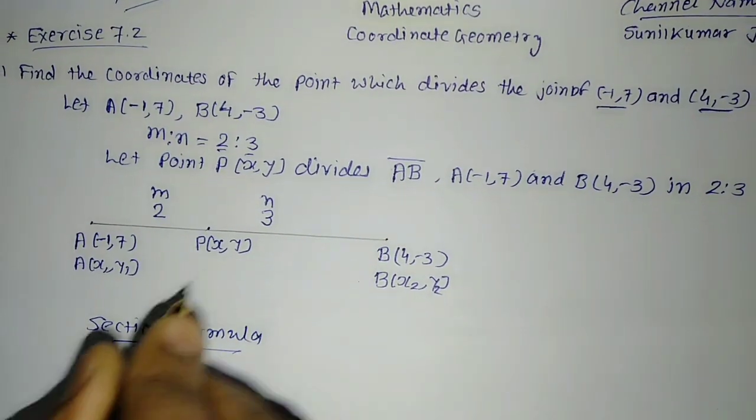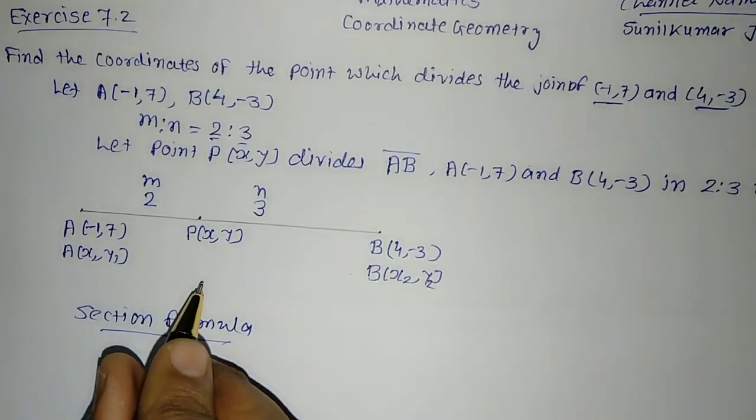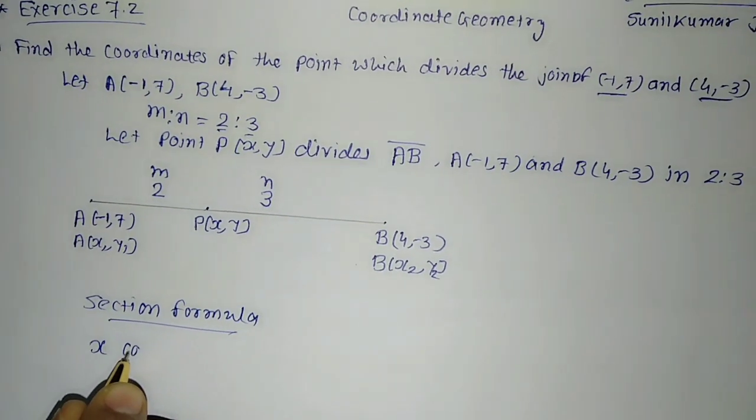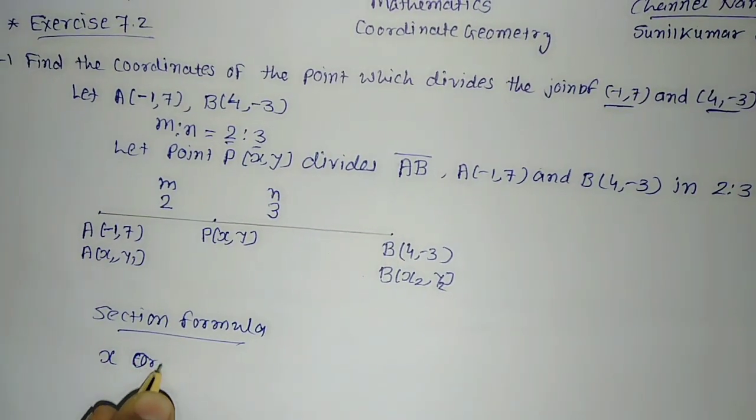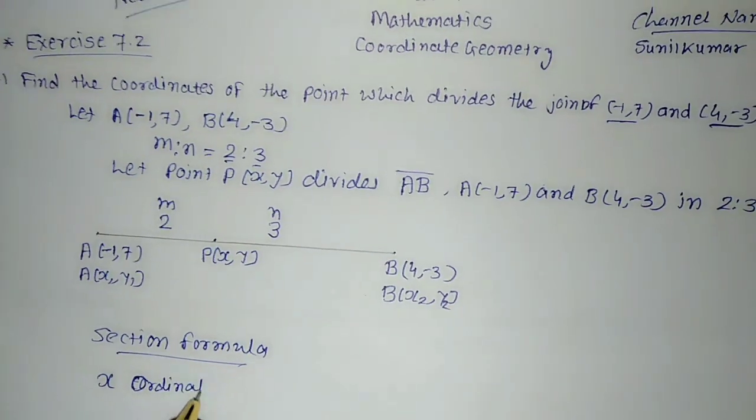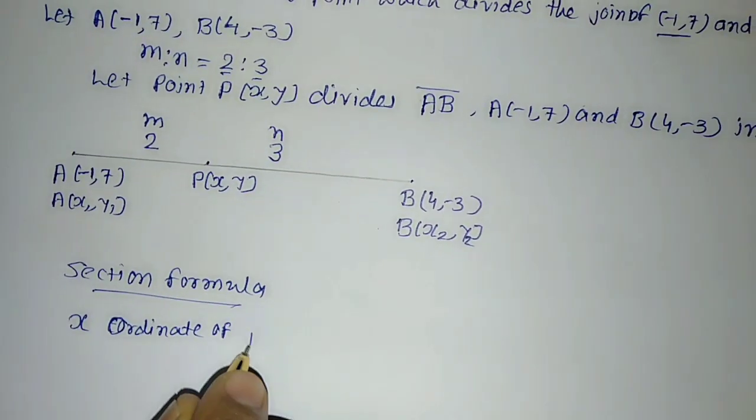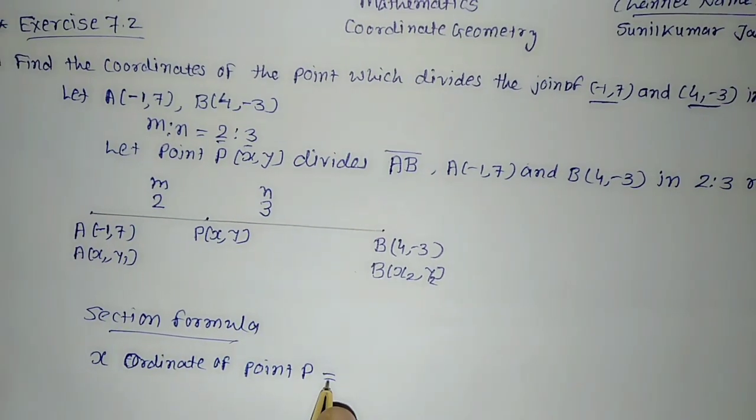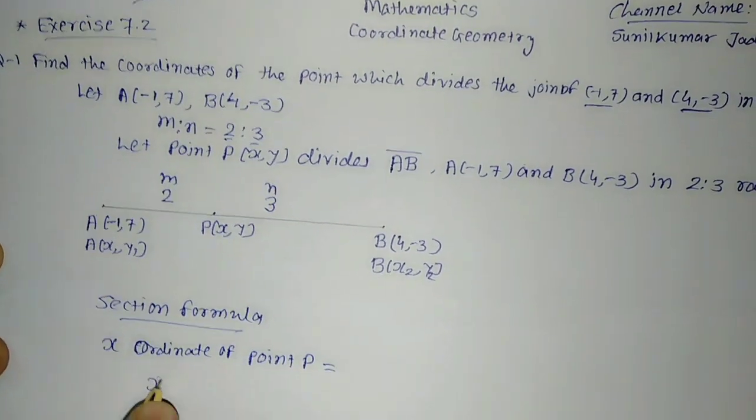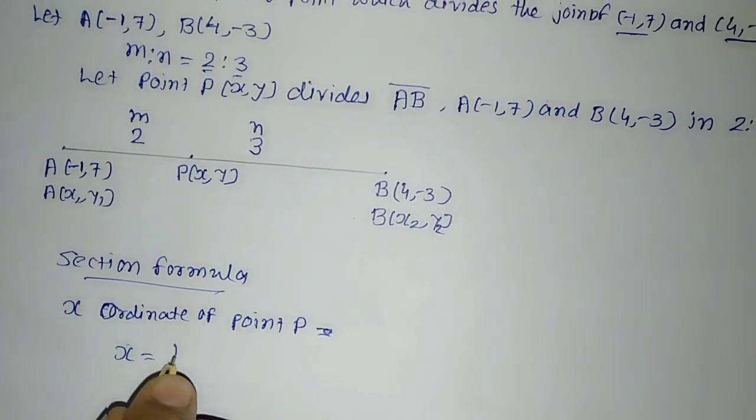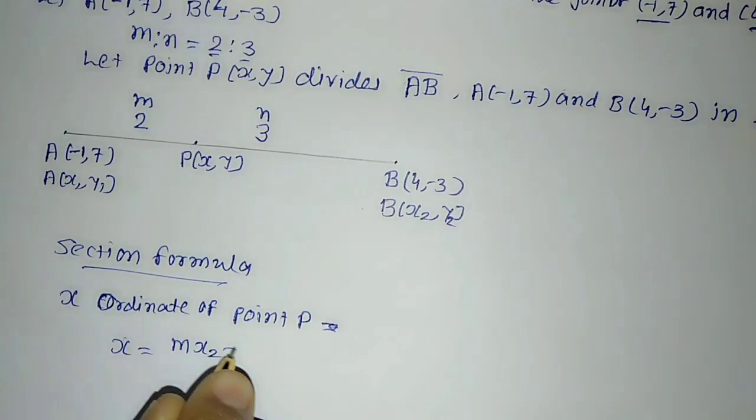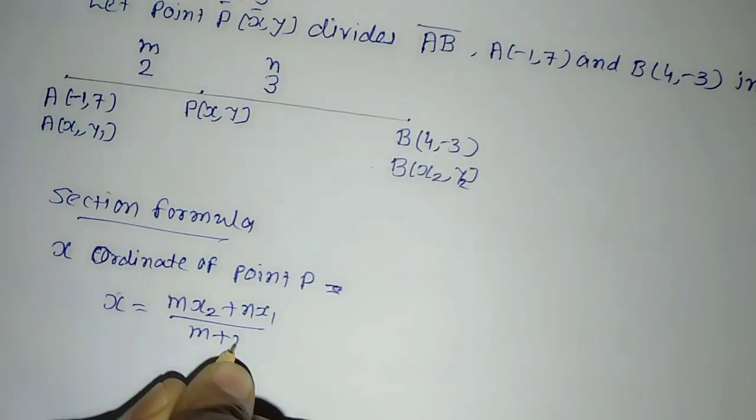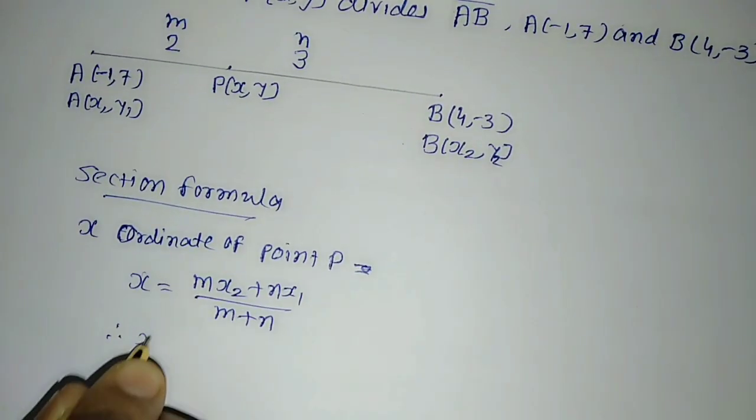As per the section formula, X coordinate of point P is equal to: X = (MX2 + NX1)/(M + N). Therefore X equals, now we will see from the figure.